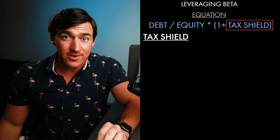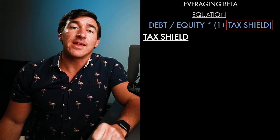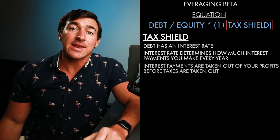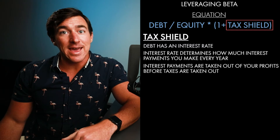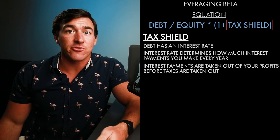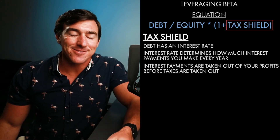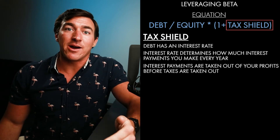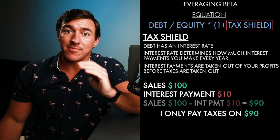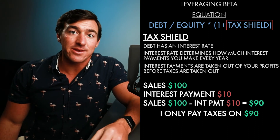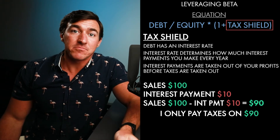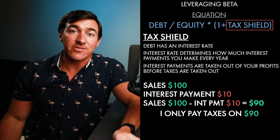What's a tax shield? There's something very interesting about debt — it has an interest rate, and that interest rate determines how much in interest payments you make every year. Those interest payments are taken out of your profits before taxes. Kind of like how student loan interest or mortgage interest can be deducted before you get taxed on your income. So if I made a hundred dollars but paid $10 in interest, I only pay taxes on $90. I do not pay taxes on the full hundred dollars. So every dollar of debt has a little bit of this tax shield built into it.